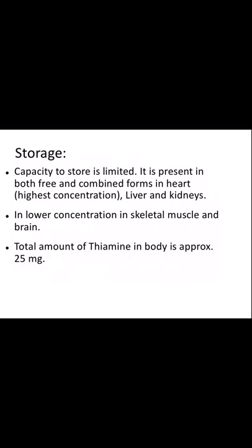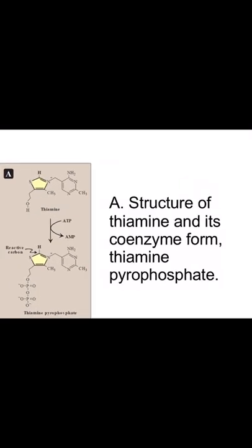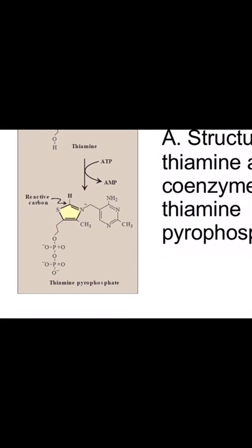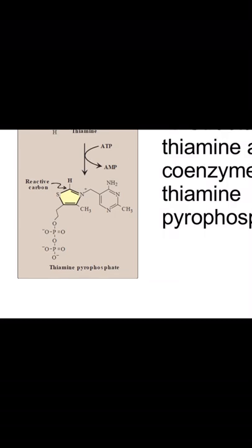Storage capacity for thiamine is limited. It is present in both free and combined forms — highest concentration in the heart, then liver and kidneys, with lower concentrations in skeletal muscles and brain. The total amount of thiamine in the body is approximately 25 mg. The active form is thiamine pyrophosphate (TPP), formed by phosphorylation — two phosphate groups are added to thiamine.